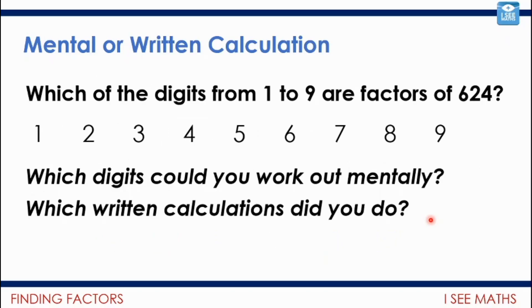Okay, mental or written calculations. So have a look at this one. Which of the digits from 1 to 9 are factors of 624? I want you to have a look at that and think, which digits can I just work out mentally? Which of these digits I can see is or isn't a factor of 624 without really needing to do any calculation? And then which written calculations maybe do you need to do? So have a think about that. Pause the video.